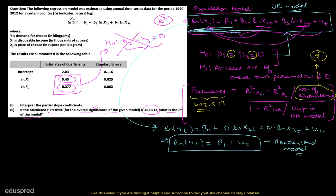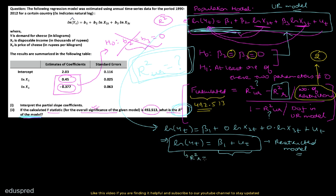We have to find R-squared unrestricted — that is what the question is asking. For R-squared of the restricted model: since the restricted model has no independent variable on the right-hand side, we cannot explain any variation in the dependent variable, so the R-squared of the restricted model is 0.